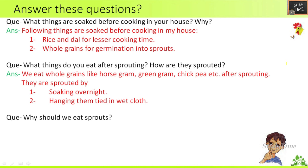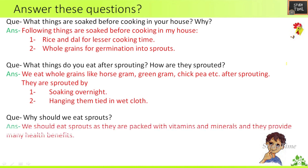Second question — what things do you eat after sprouting and how are they sprouted? By soaking overnight and hanging them tied in a wet cloth. First soak whole grains for six to eight hours, then hang them tied in a wet cloth; they will sprout within six to twelve hours depending on the grains. Third question — why should we eat sprouts? We should eat sprouts as they are packed with vitamins and minerals and provide many health benefits.